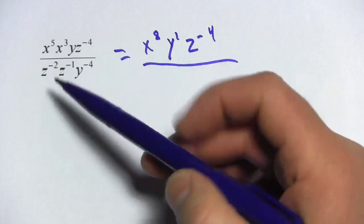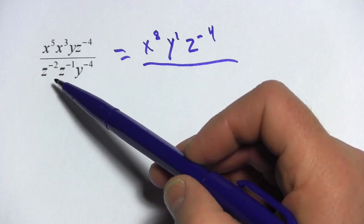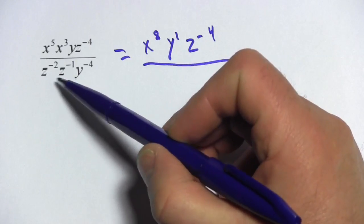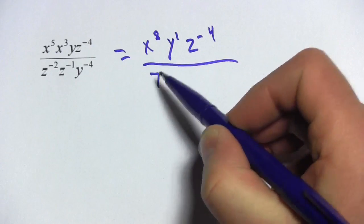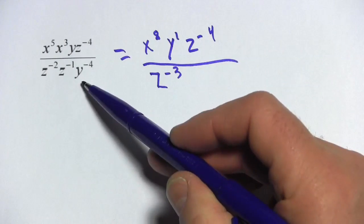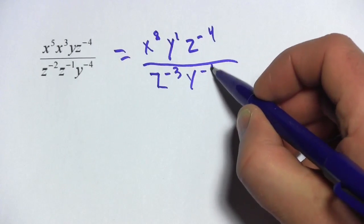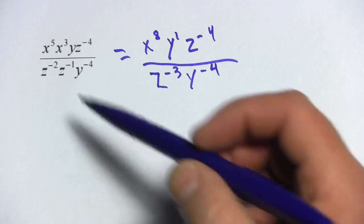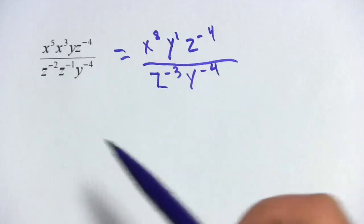I'm going to see if I can simplify anything on the bottom. Let's see, I've got z to the negative 2 and z to the negative 1. And remember, you're adding exponents when you multiply. So this is z to the negative third down there. And then I've got my y to the negative fourth.